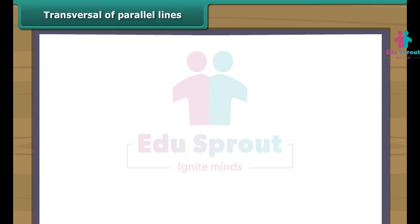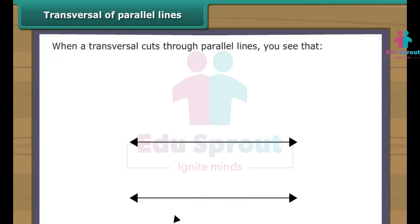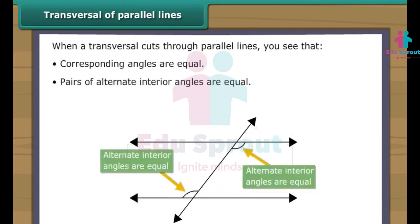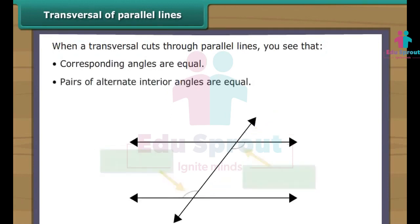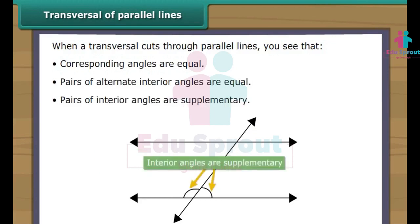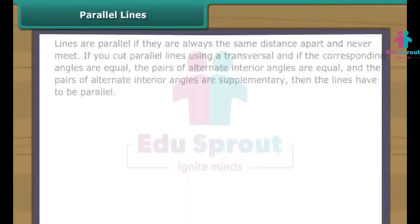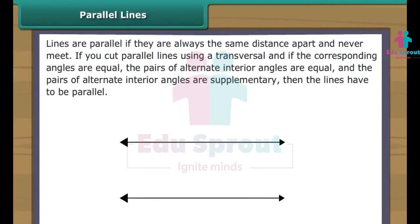When a transversal cuts through parallel lines, you will see that corresponding angles are equal, pairs of alternate interior angles are equal, and pairs of interior angles are supplementary. Lines are parallel if they are always the same distance apart and never meet. You can also check if lines are parallel by cutting the lines using a transversal. If the corresponding angles are equal, the pairs of alternate interior angles are equal, and the pairs of alternate interior angles are supplementary, then the lines have to be parallel.